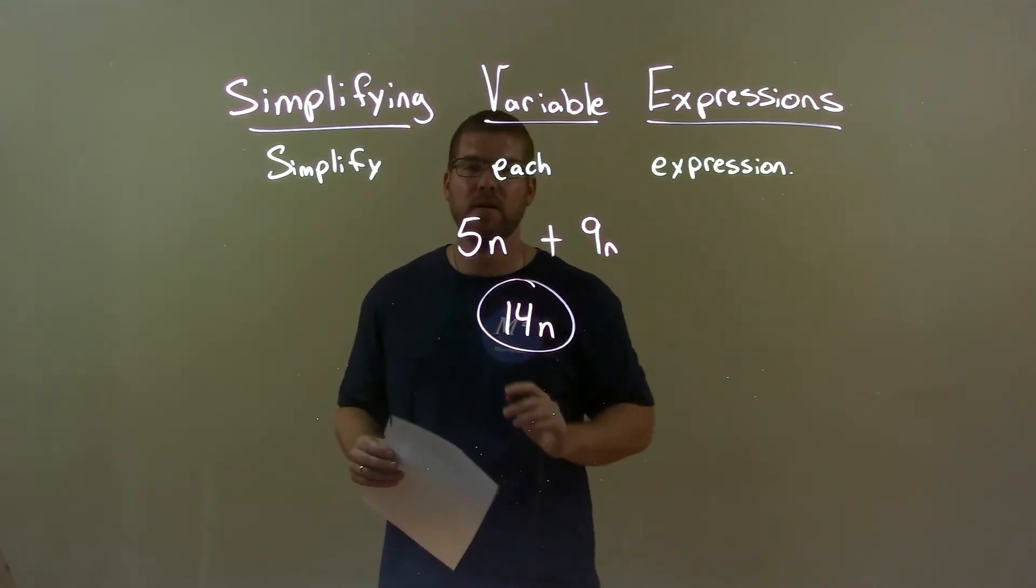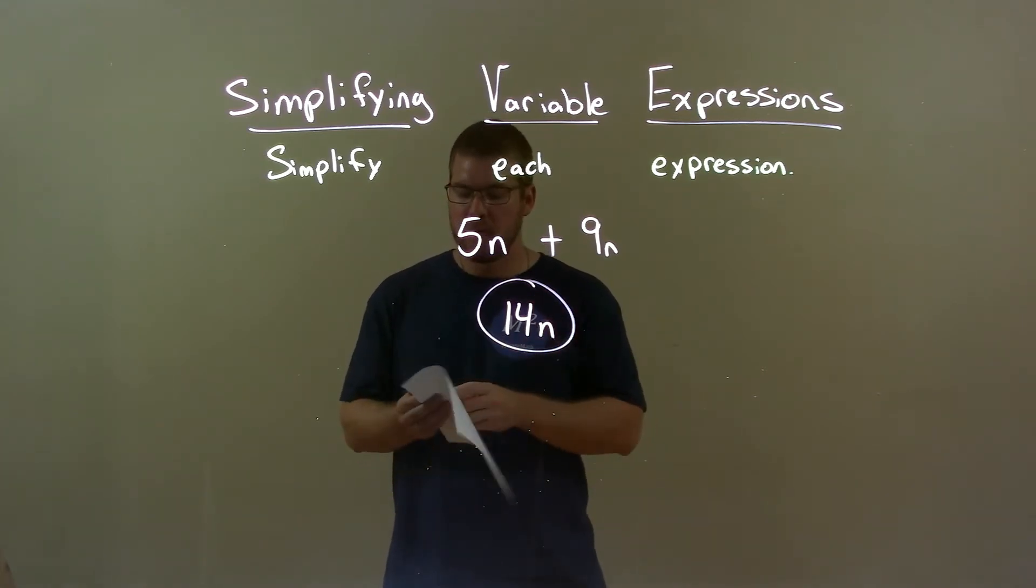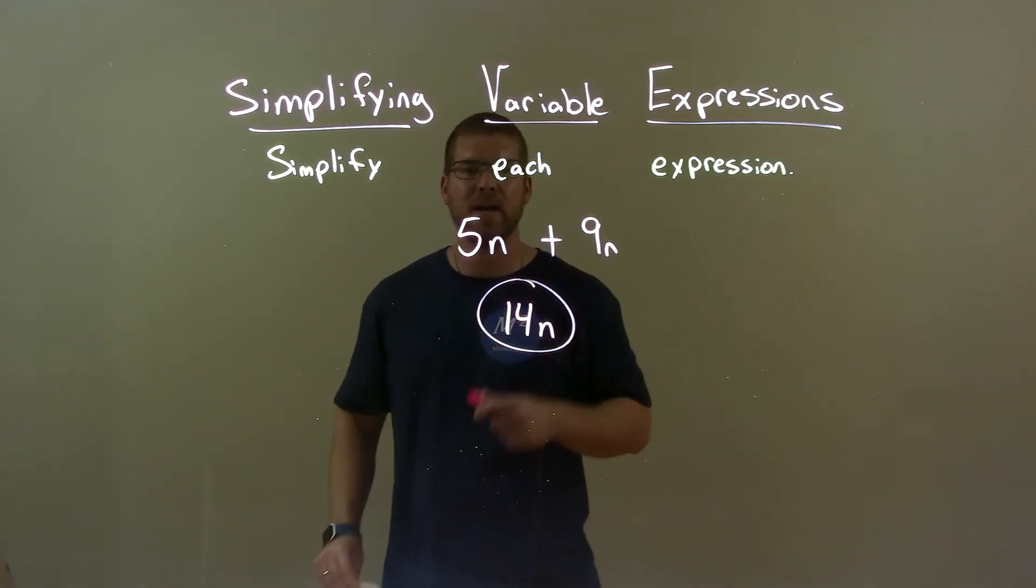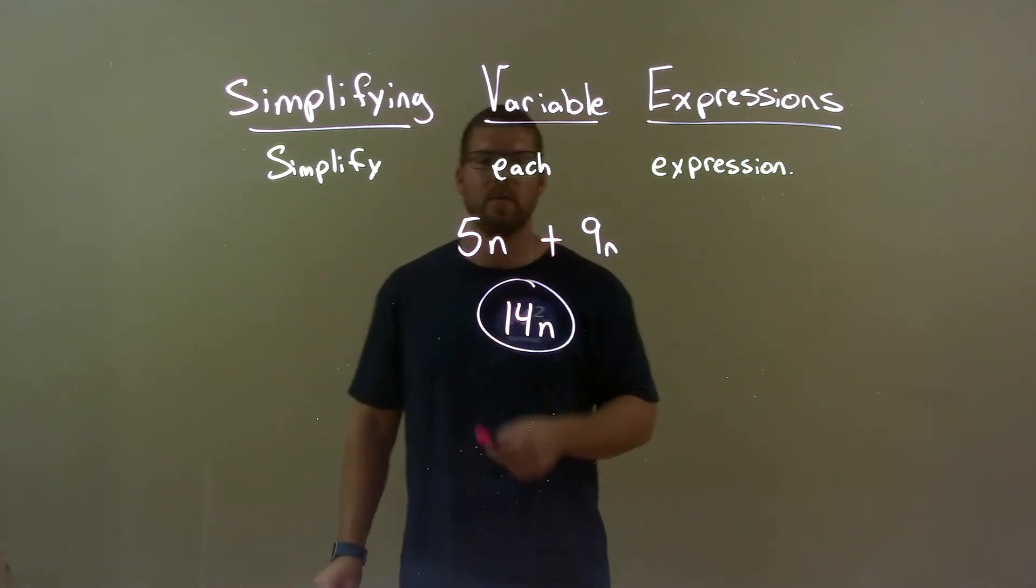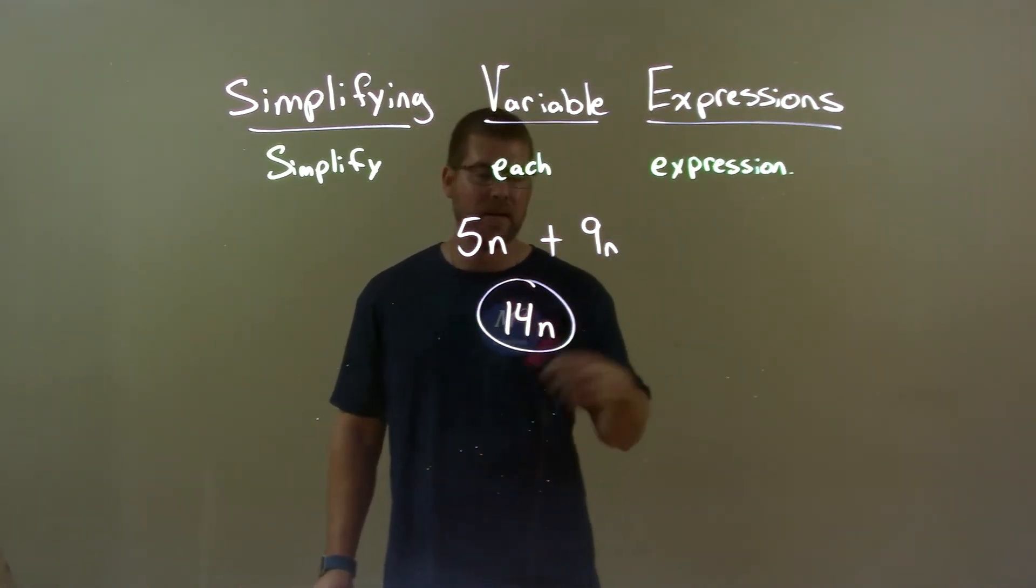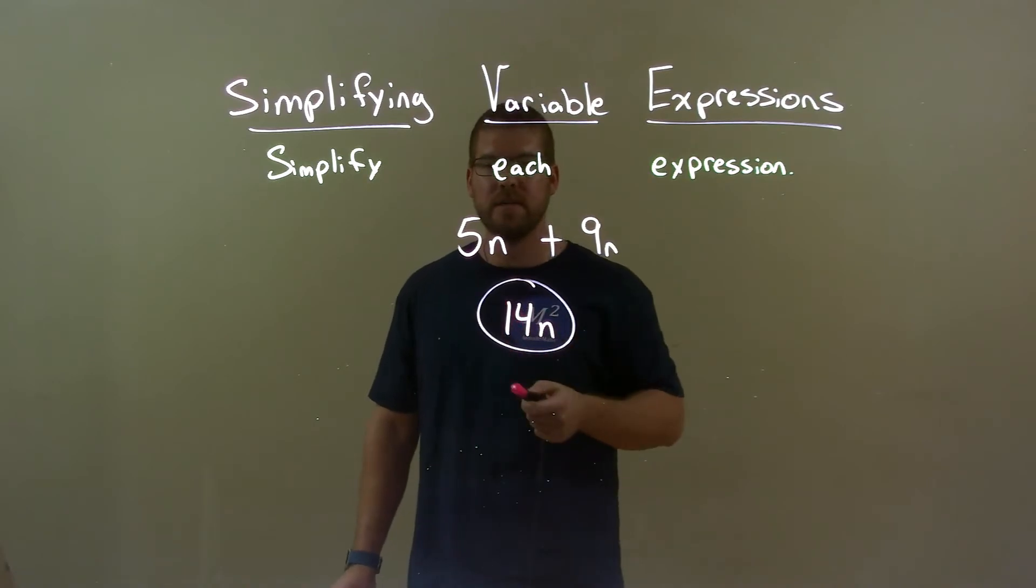My final answer here is just 14n. Quick recap, we're given 5n plus 9n and we have to simplify that expression. Well, 5 plus 9 is 14, bring down the n and our final answer is just 14n.